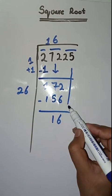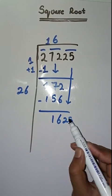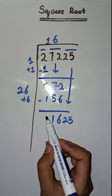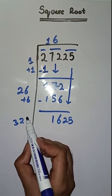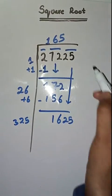Next pair is twenty-five, bring it down. Now take twenty-six plus six which is equal to thirty-two. Now we will take a number five. Three twenty-five times five is sixteen twenty-five.